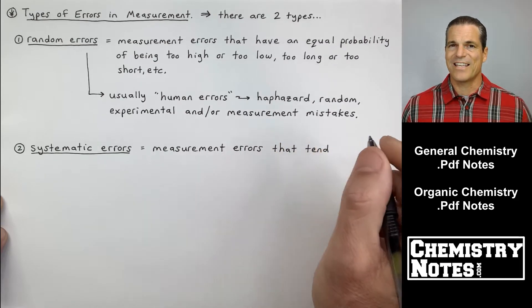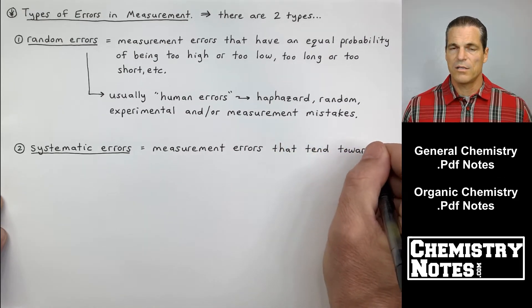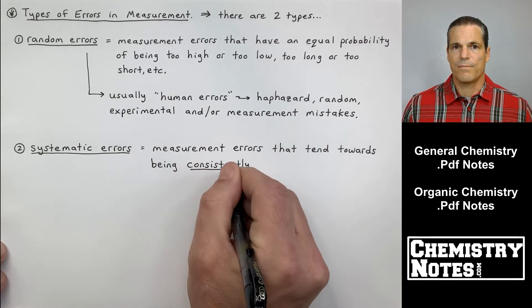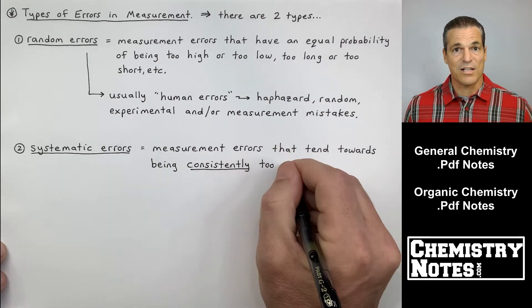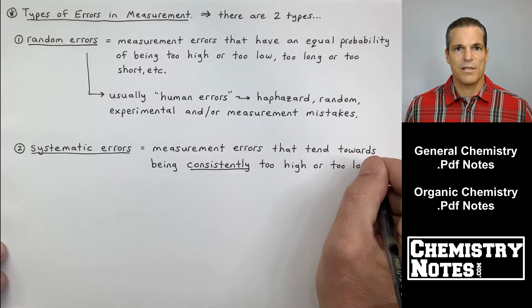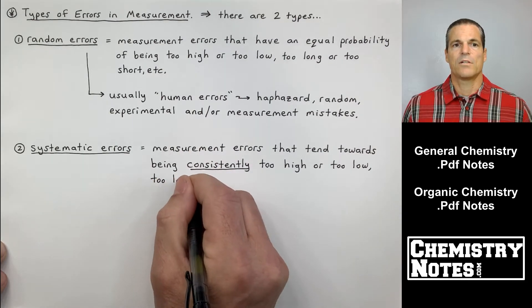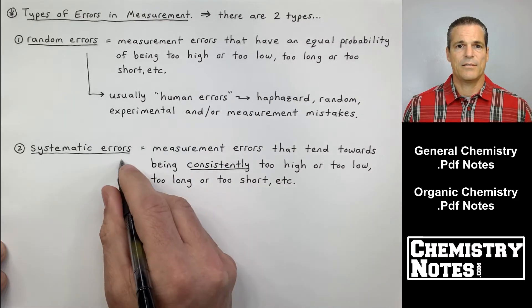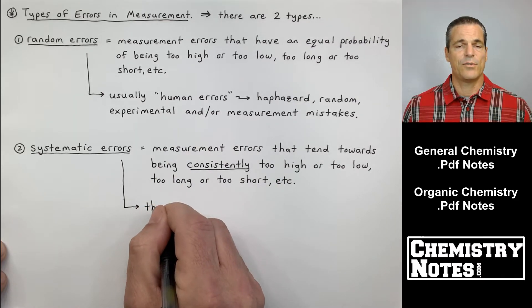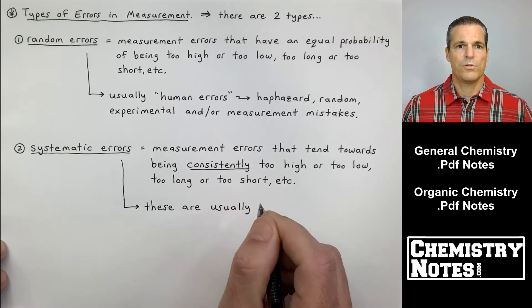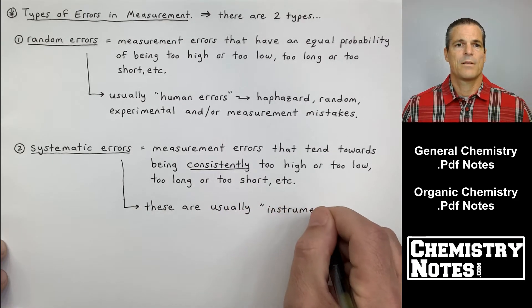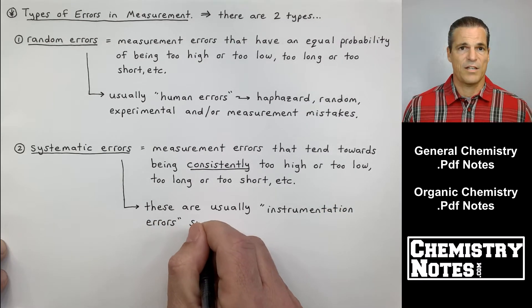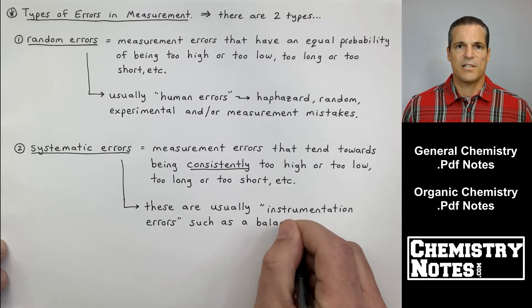Systematic errors are errors that are consistently wrong in one direction or the other. For example, if you have an analytical balance that's not calibrated correctly, maybe every measurement is too high. So systematic errors are measurement errors that tend towards being consistently too high or too low, too long or too short. Systematic errors are not human errors. Systematic errors are usually instrumentation errors.